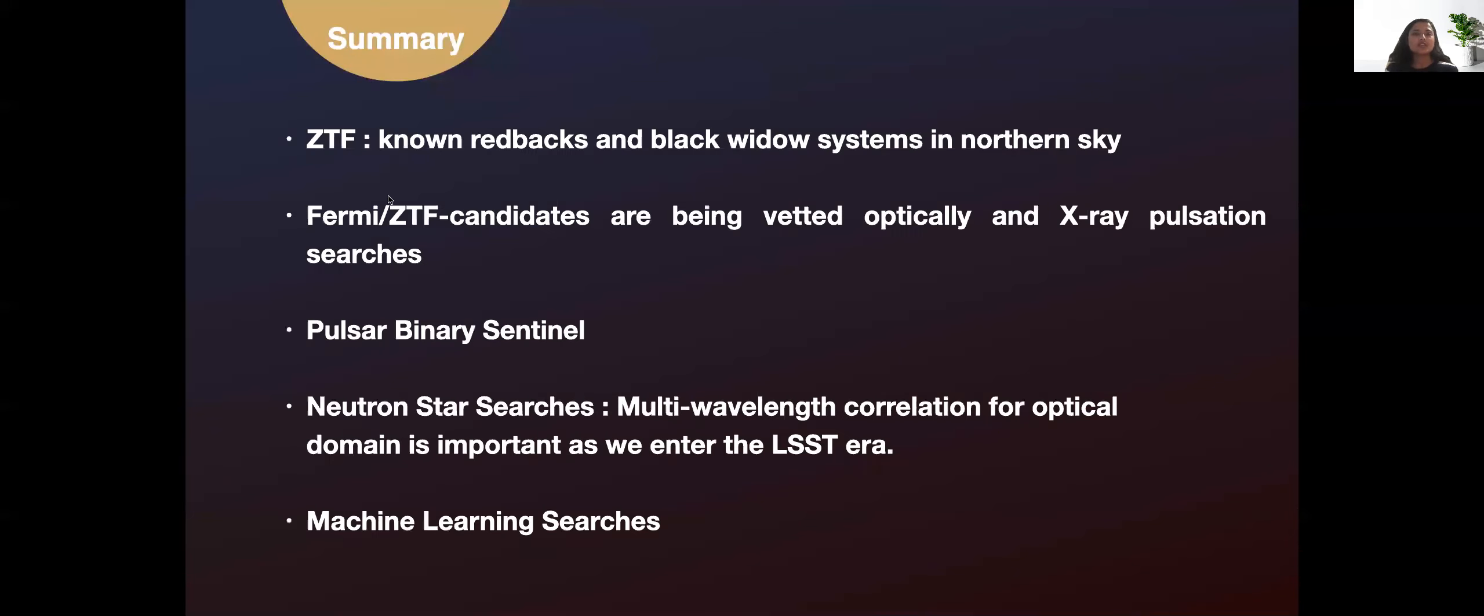In summary, ZTF is an excellent way to monitor known redbacks and black widow systems in the northern sky above a declination of minus 31 degrees. Fermi ZTF candidates are being vetted optically and using x-ray pulsation searches and we are now finding more and more interesting systems there. As we had said before, ZTF is an excellent way to monitor pulsar binaries. We have constructed something called the pulsar binary sentinel where we construct light curves of known pulsars whether as x-ray binaries or radio millisecond pulsars and track how they evolve over a very short time scale to see if they have any changes in their state.